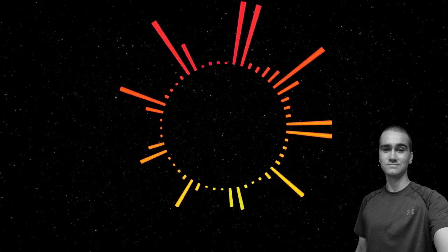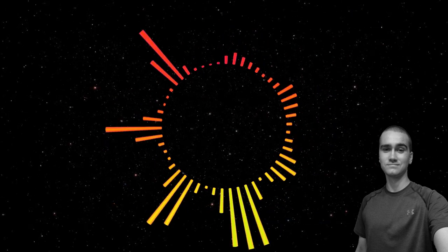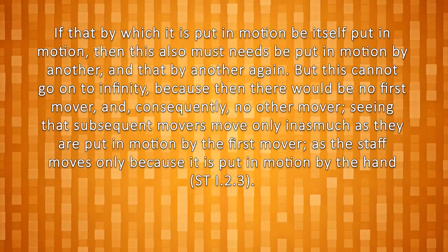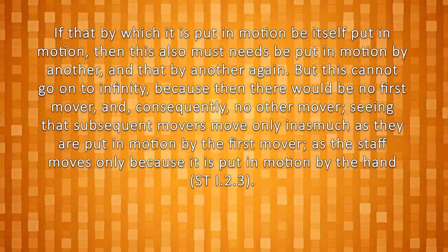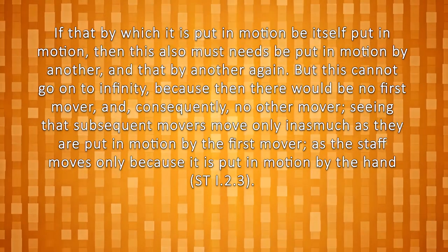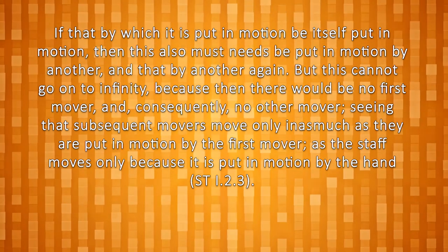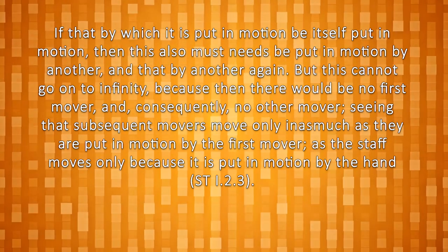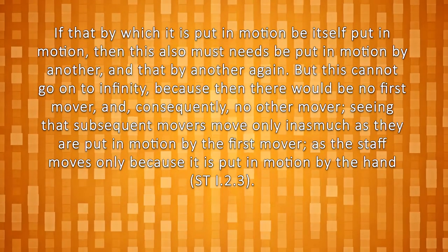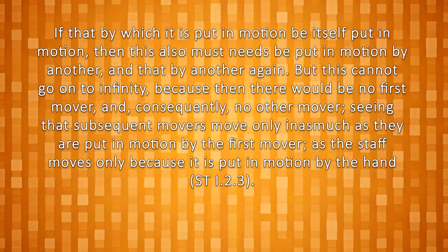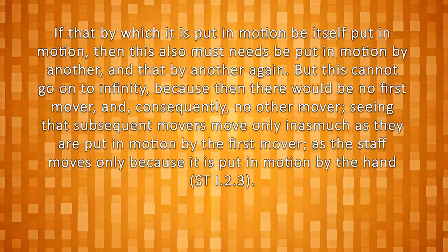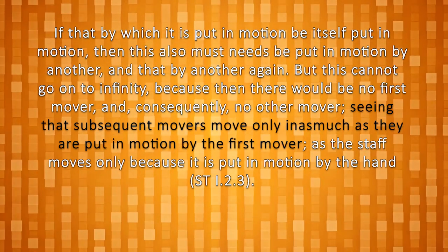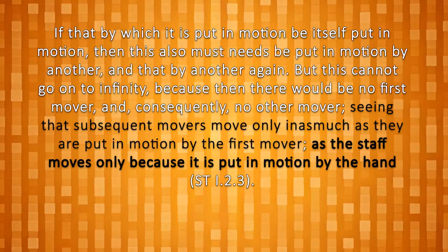In this entire paragraph, he is of course talking about act and potency, which is what I outlined earlier in the video. Aquinas goes on to say, if that by which it is put in motion be itself put in motion, then this also must need be put in motion by another, and that by another again. But this cannot go on to infinity, because then there would be no first mover, and consequently, no other mover. Seeing that subsequent movers move only in as much as they are put in motion by the first mover, as the staff moves only because it is put in motion by the hand.